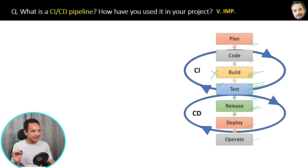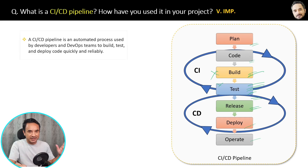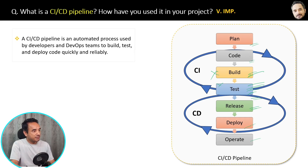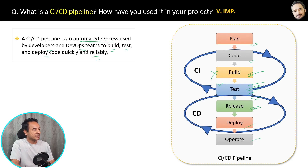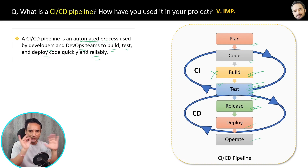If this is clear to you, write 'crystal clear' in the comments so that you never forget this concept. Here is the simplest definition: a CI/CD pipeline is an automated process used by developers and DevOps teams to build, test, and deploy code quickly and reliably. Build and test is the part of the developer; deployment is the part of the DevOps or infra team. This definition in the book will help you revise this concept quickly.